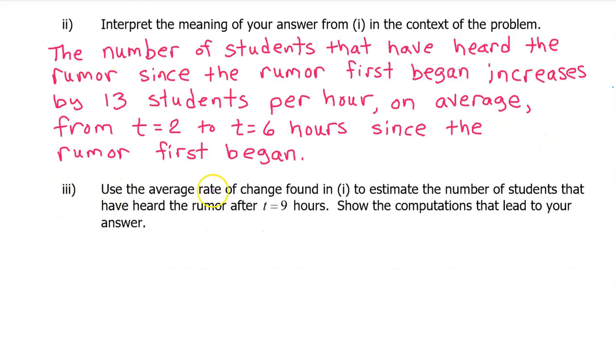Part 3: Use the average rate of change found in part 1 to estimate the number of students that have heard the rumor after t equals 9 hours. Show the computations that lead to your answer. Our strategy is to write the equation of a secant line from t equals 2 to t equals 6 in point-slope form. So we're going to need a point and the slope.